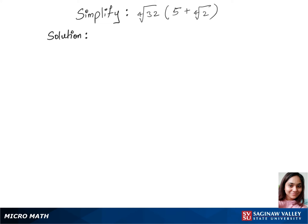To simplify this question, we'll first split the first part, which is the 4th root of 32. We can split 32 into 16 times 2, giving us 4th root of 16 times 2, times the bracket 5 plus 4th root of 2.